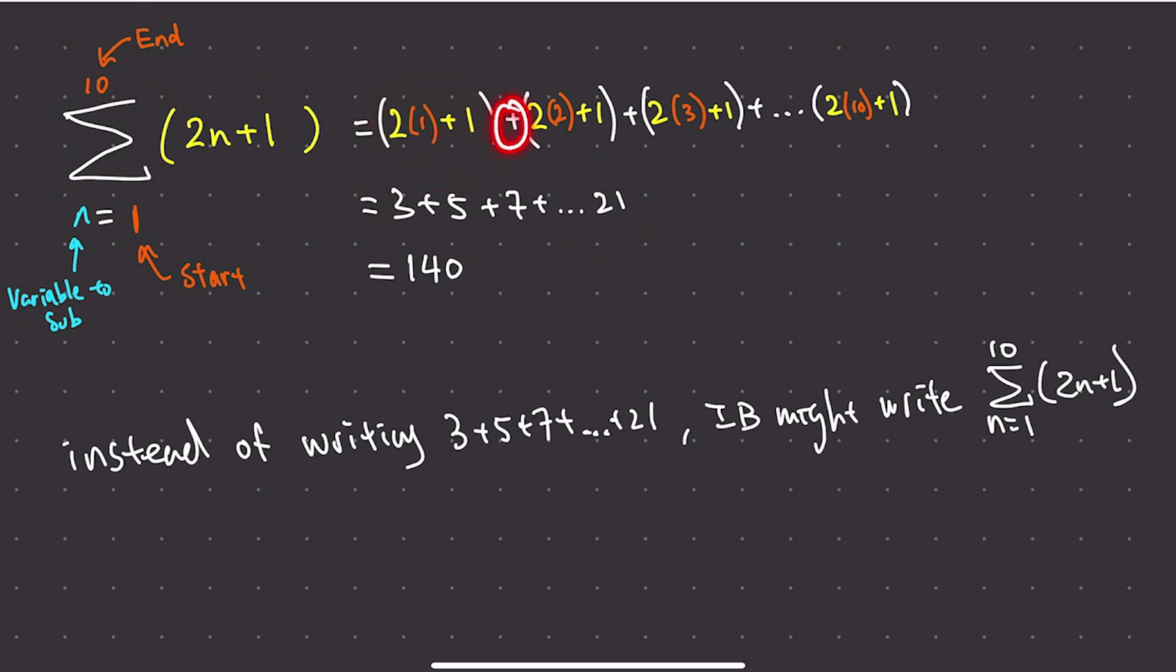And then we need to add the formula again. This is the formula again. However, we are subbing in 2. So as you can see, the starting number, we start at the starting number here. And then we end at the ending number. And then every single time we add, we go 1, 2, 3, 4, 5, 6, so on and so forth until 10.